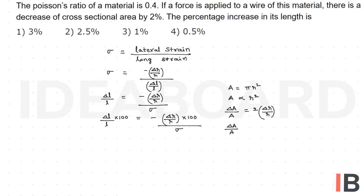Delta A by A times 100 equals 2 times delta R by R times 100. But in the question, the decrease in the area of cross-section is 2%. So minus 2 equals 2 times delta R by R times 100.